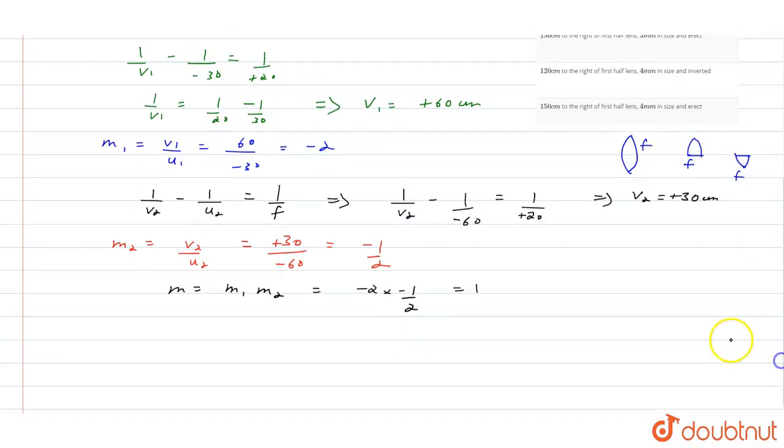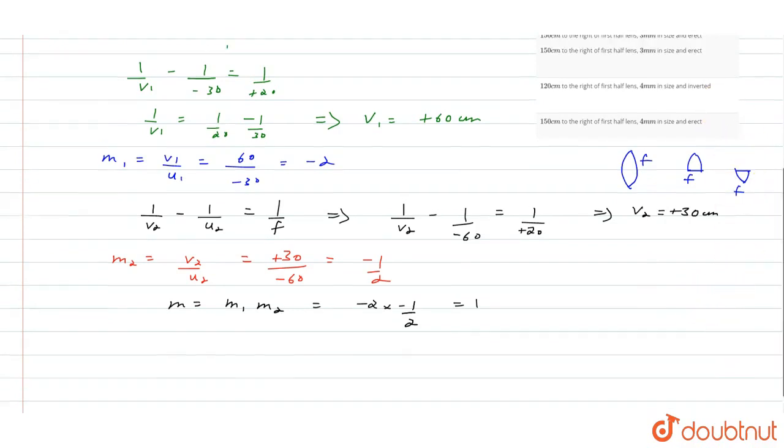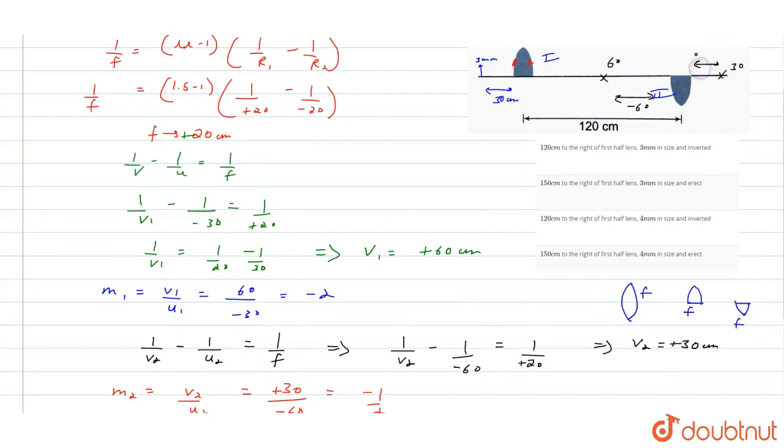So the final image is formed 30 cm to the right of lens 2. This distance is 120 plus 30, that is 150 cm to the right of lens 1.